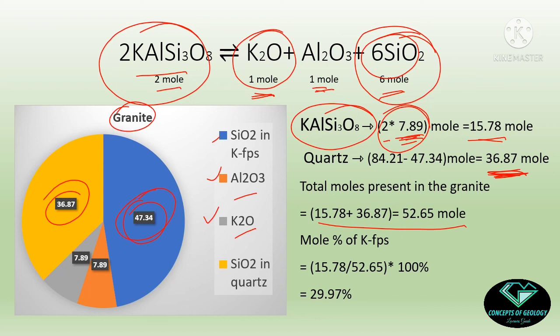The mole percentage of K-feldspar is 15.78 divided by 52.65, multiplied by 100, which equals 29.97 percent. So in this rock we have approximately 30 percent K-feldspar and 70 percent quartz. This makes it an alkali feldspar granite. We have solved the problem. If you have not understood, let me know in the comment section. Thank you.